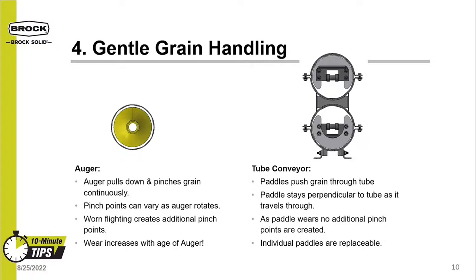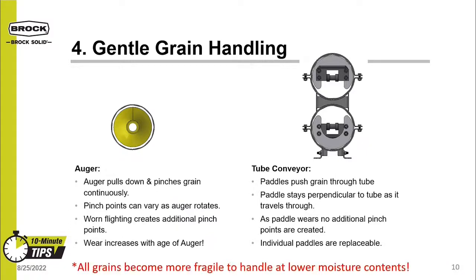In a tube conveyor, the paddles push grain through the tube, and the only friction on the grain is along the bottom layer. The paddle stays perpendicular to the tube as it travels through, which does not introduce any new pinch points. Also, as the paddles wear, no additional pinch points are created or increased in size, and individual paddles that become worn out or broken can be replaced individually. Another item to remember is that all grains become more fragile at lower moisture contents, so you may want to put more emphasis on gentle handling equipment when moving dry grains.